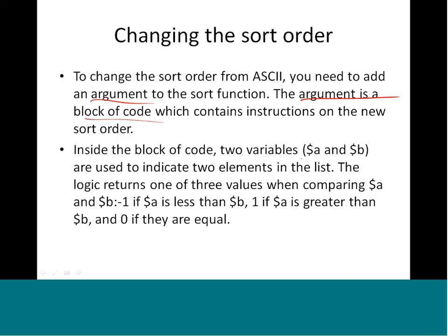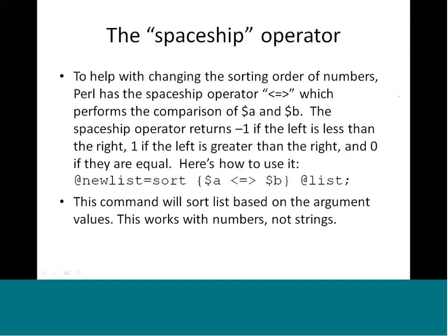Essentially, to change the sort order you need to add an argument to the sort function. The argument is a block of code which contains instructions for what the new sort order is. Inside the block of code we define two variables, $a and $b, which indicate the elements in the list, and then we define a logical operation between these two to denote the real sort order. The logic returns one of three values when comparing $a and $b.